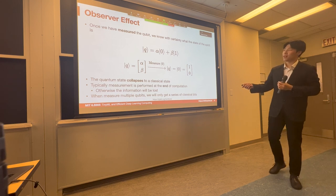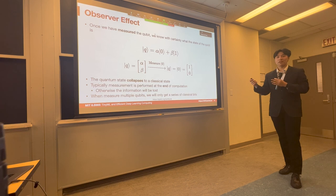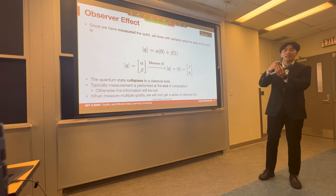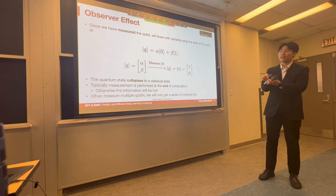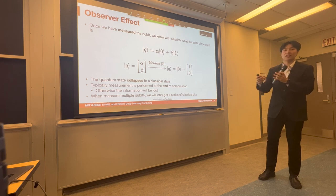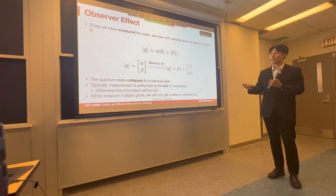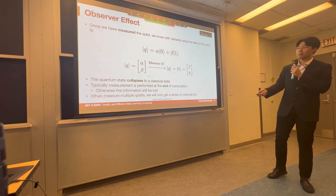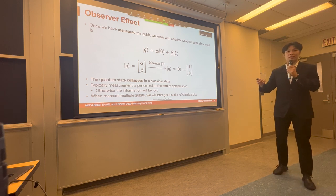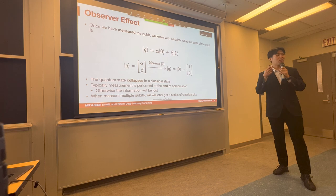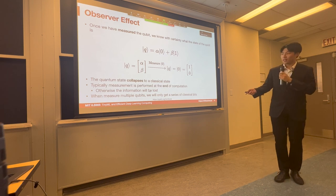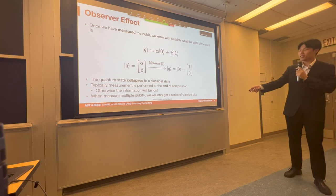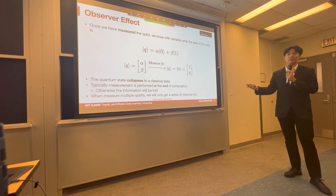Here comes a very interesting part called the observer effect. When we do the measurement of qubits, the qubits will collapse. Previously q0 was a superposition of one and zero. But after measurement — say we get zero — the state itself also collapses to the zero state. That means we cannot reuse the state after observing it. That is why typically all quantum circuits perform measurements at the end of computation, otherwise the information in between would be lost. When we measure multiple qubits, for example 10 qubits, we finally get a series of classical bits, just like measuring one bit.